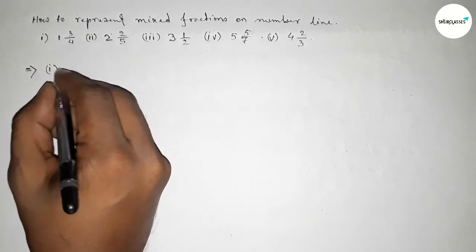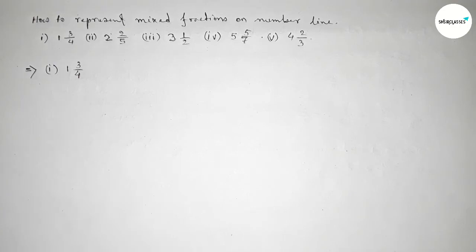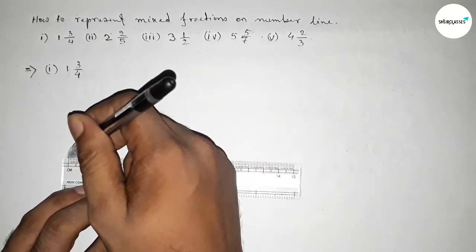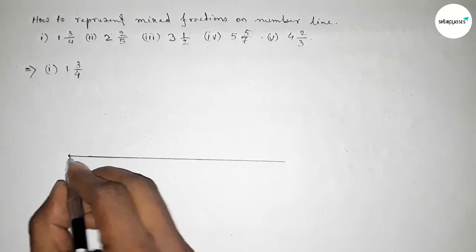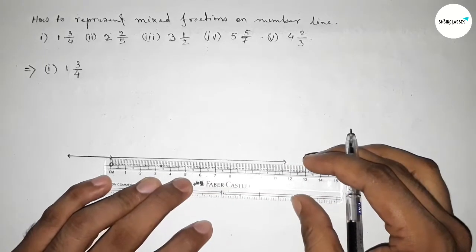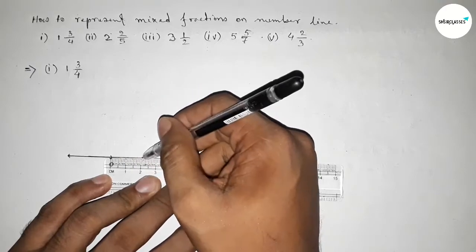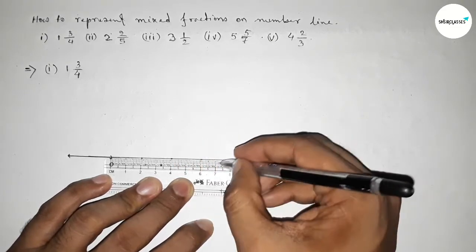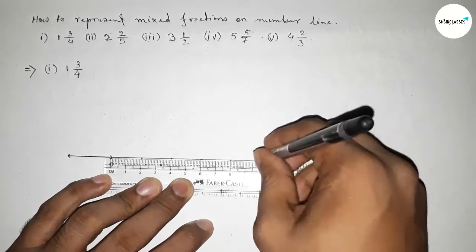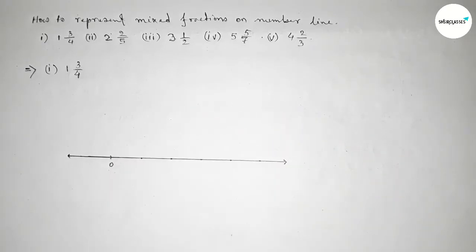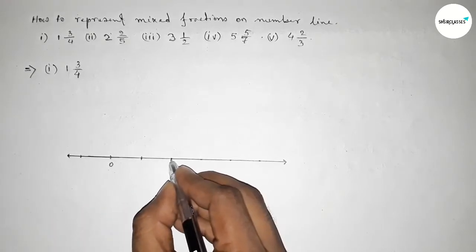The first mixed fraction is one and three over four. First, we have to draw a number line of any length, taking arrow marks on both sides. Starting with zero, I'm going to use a scale to mark the numbers on the line. Taking the length between any two numbers as one unit for calculation.